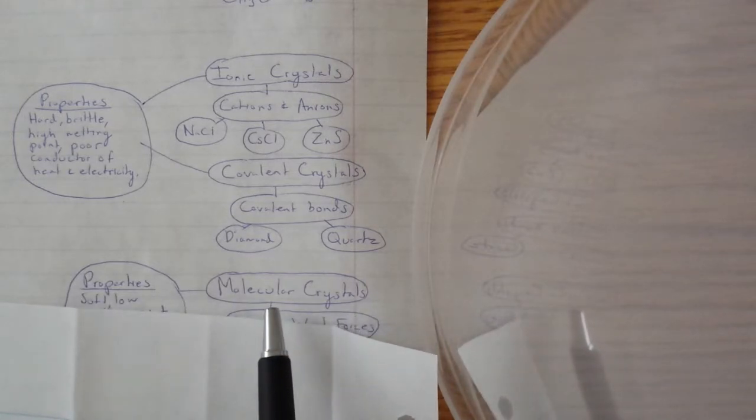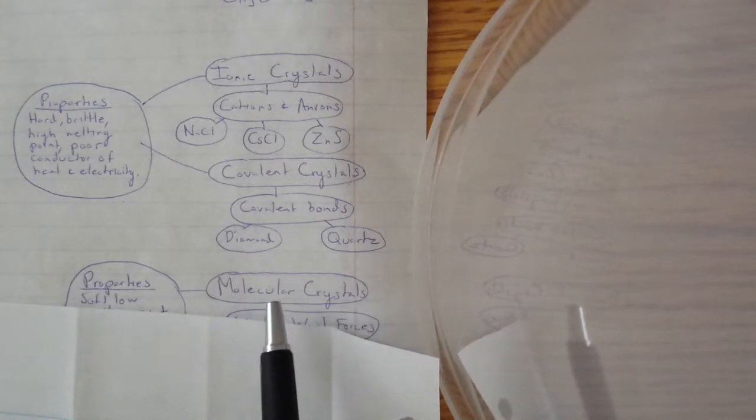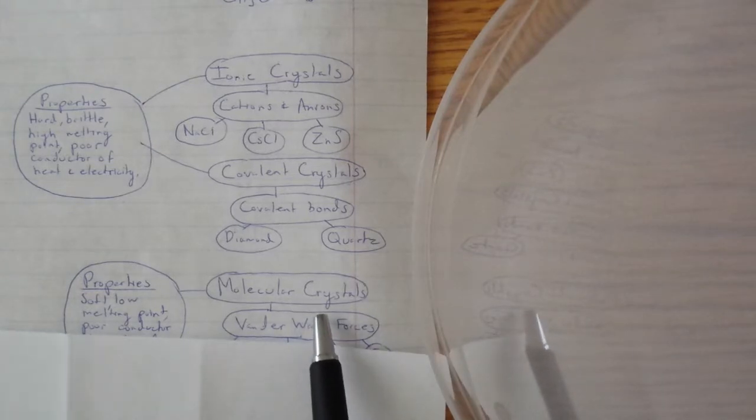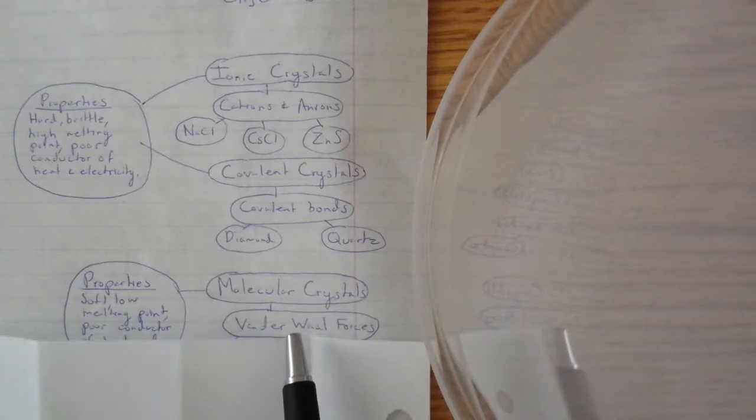The next are molecular crystals. Molecular crystals are made up of van der Waals forces such as hydrogen bonding, dipole-dipole bonding, and dispersion forces.